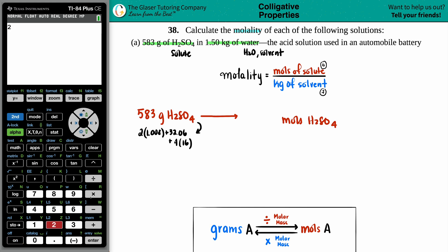So let's see, two times 1.008 plus 32.06 plus four times 16, 98 something? 98.076.